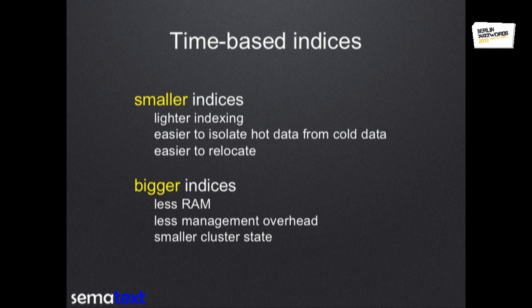Then we moved to time-based indices, and let me explain why that is a good idea. If you're writing to a smaller index — only today's index, for example — you're invalidating fewer caches and doing fewer merges, so indexing will be faster. Also when searching, because data is sliced up, normally when you're searching for logs you're searching only on recent data, so if you have time-based indices you can just search the chunk of indices you're interested in. And when you delete data, you can delete entire indices instead of deleting documents from within an index and causing even more merging. Of course, having too many small indices has an overhead in terms of memory, cluster state, and per-index stats — so it's a trade-off.